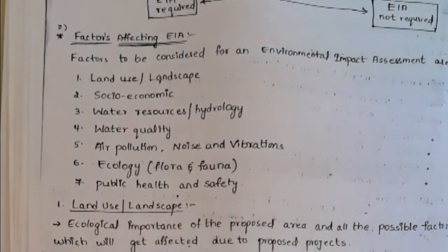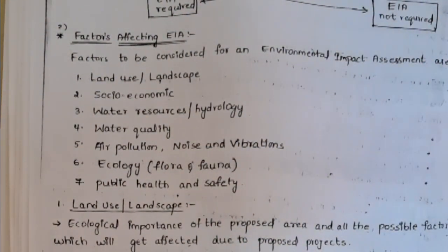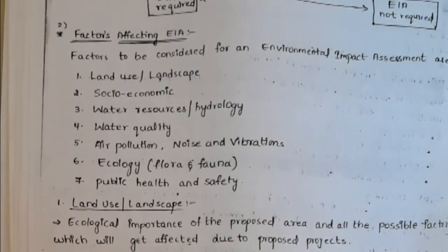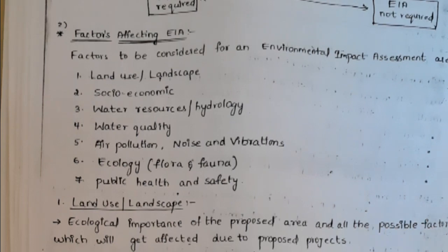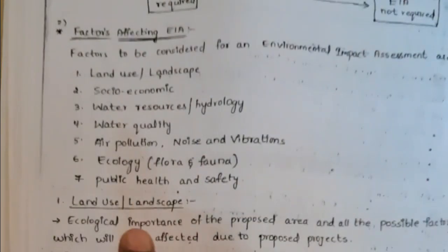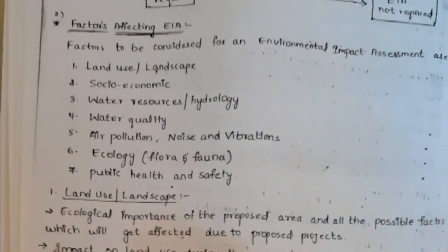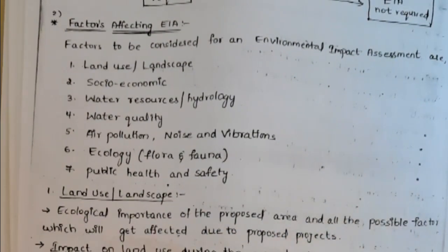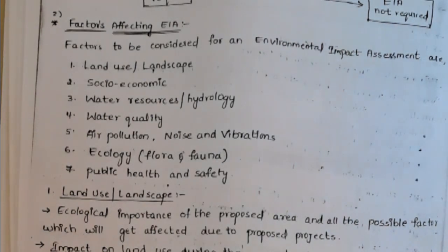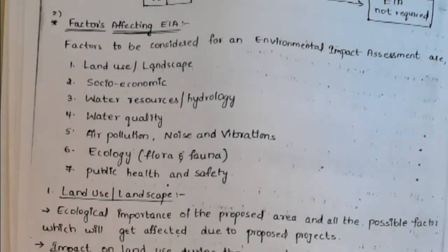First, land use. For the proposed project, if there is a great effect on vegetation, it will affect agricultural activity. Land use changes should happen in the optimal way so that the impact is minimized and the land is reclaimed as soon as possible. If there is an impact on the pre-existing land use pattern, we will address that optimally.